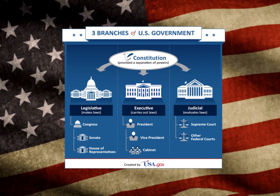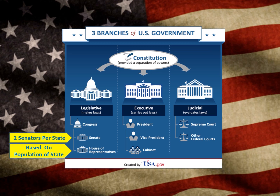This graph shows types of fruit, so it is categorical data and it is a bar graph. In our government, we have three branches: the legislative branch, the executive branch, and the judicial branch. In the House of Representatives, the number of people is based on the population of the state — more people in your state means more representatives.